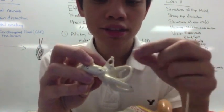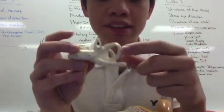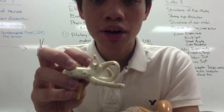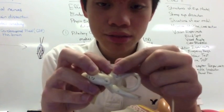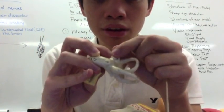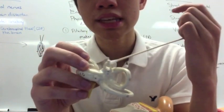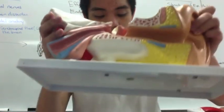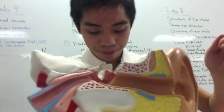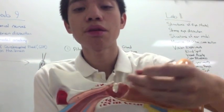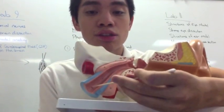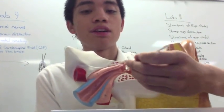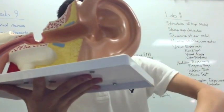Your stapes would connect to an oval window. There's a hole under here which is called the oval window, and that's where sound would enter through. Something else you need to know is the auditory or Eustachian tube — you can say either one: auditory tube or Eustachian tube.